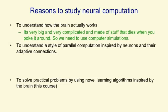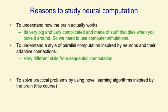The second is to understand a style of parallel computation that's inspired by the fact that the brain can compute with a big parallel network of relatively slow neurons. If we can understand that style of parallel computation, we might be able to make better parallel computers. It's very different from the way computation is done on a conventional serial processor.